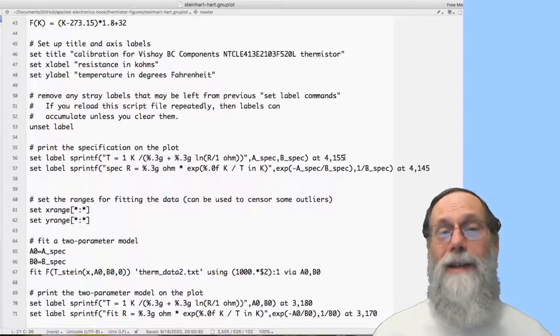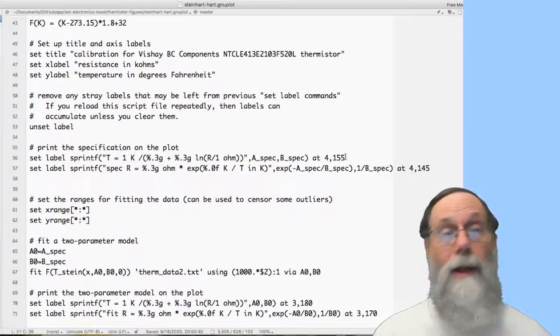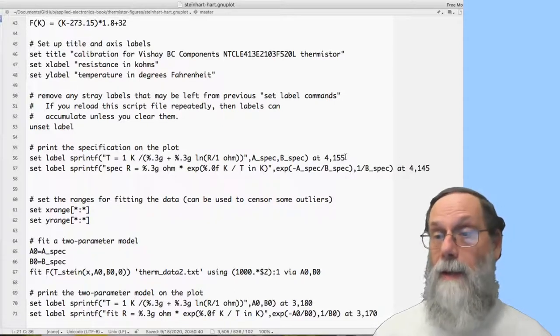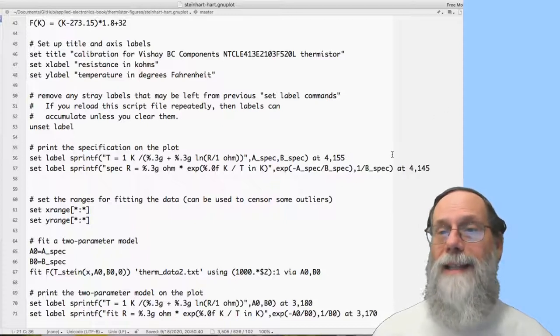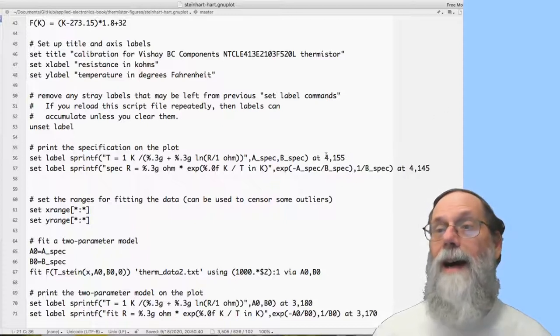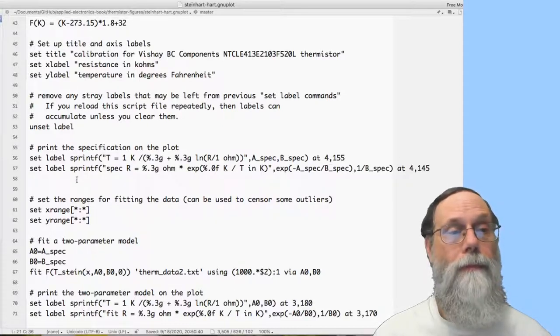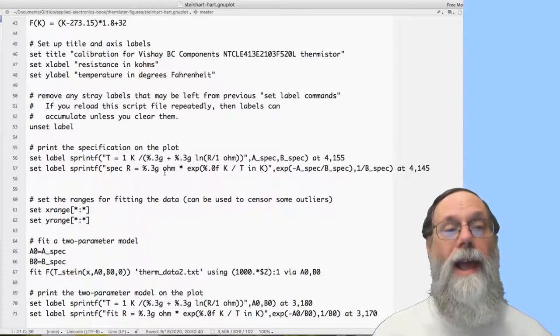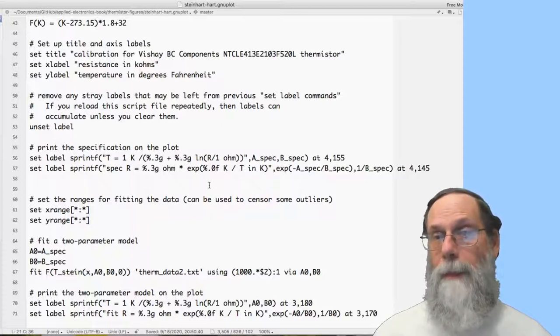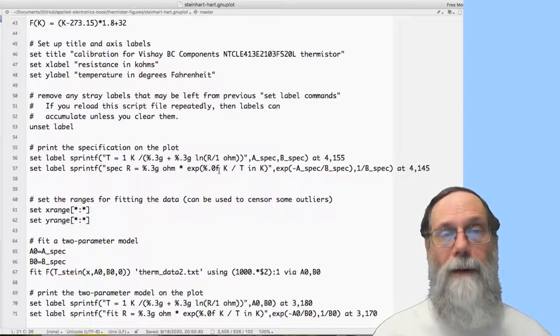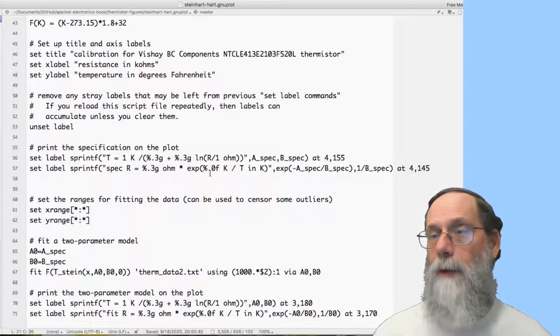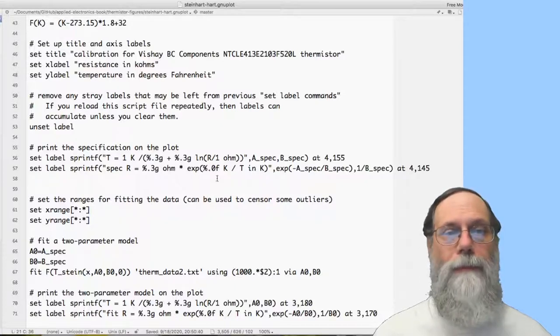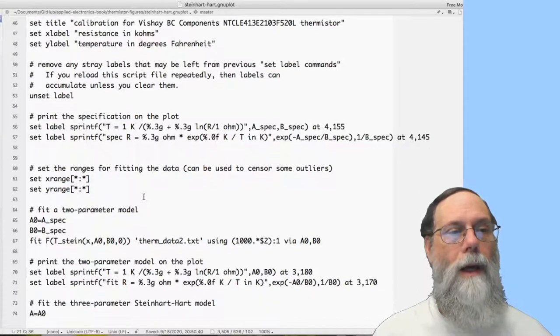And I've got another one number here that'll do that. And that's times the natural log of r over one ohm. And that's the a spec and b spec values. So what I'm printing out on here is the specification values for the temperature as a function of resistance. And I'm saying where on the plot to put it. Now, I did not know in advance where on the plot to put things. These label commands were actually added later after I looked at the plot and said, oh, I'd like to put a label here. So I didn't start out by saying I want the label right here. I added that after I knew where on the plot I wanted to put things. I also turned this thing around to give the resistance as a function of temperature.